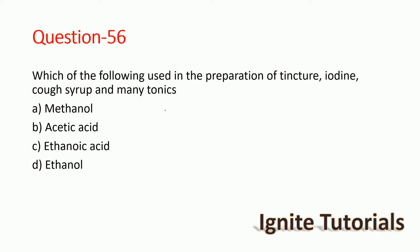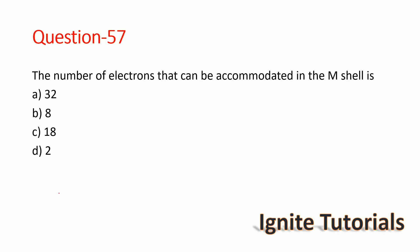Question 56: Which of the following is used in the preparation of tincture iodine, cough syrup, and many tonics? The correct answer is ethanol. Ethanol is used in the preparation of tincture iodine, cough syrup, and many tonics — option B is correct.